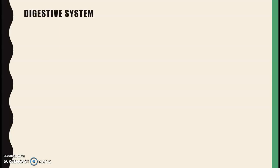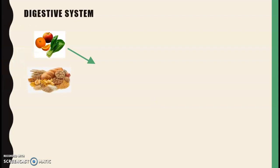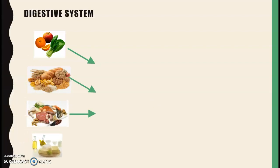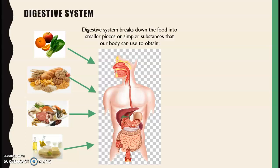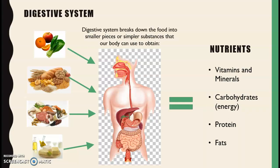In order to get energy, we use our digestive system to break down the food into simple substances, which are used to obtain nutrients. We can eat different types of food: fruits and vegetables, grains such as rice or bread, meat and beans, fats and oils. These foods are digested by our digestive system. For example, from fruits and vegetables you obtain vitamins and minerals; from grains, carbohydrates for energy; from meat and beans, protein; and from fats and oils, fats that maintain the temperature of our body.